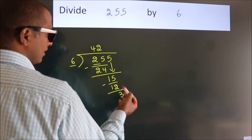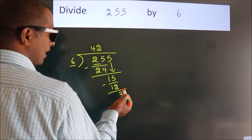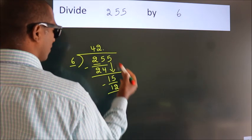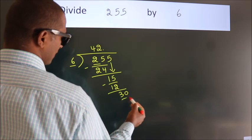After this, no more numbers to bring down. So what we do is, we put a dot and take 0. So, 30.